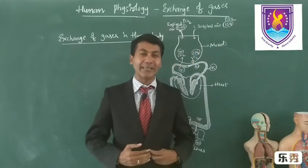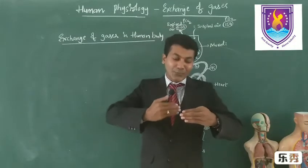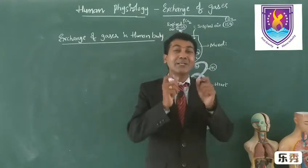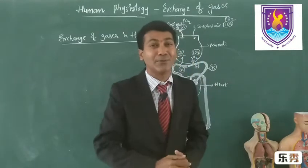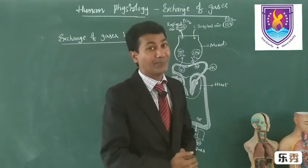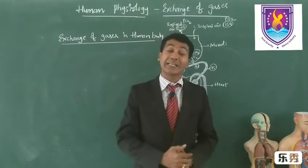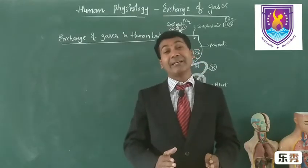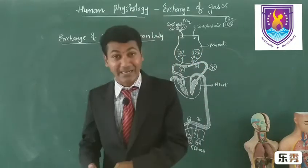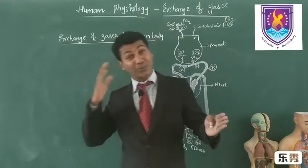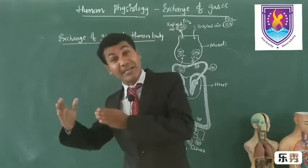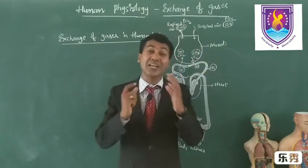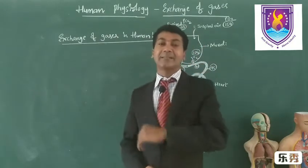That means, in our body, if a gas moves from one organ to another organ, pressure gradient plays a vital role — a very important role. Today I am going to explain how this pressure gradient helps in the movement of gases like oxygen from lungs to tissues and carbon dioxide from tissues to lungs. How is this entire journey taking place? Let us discuss.